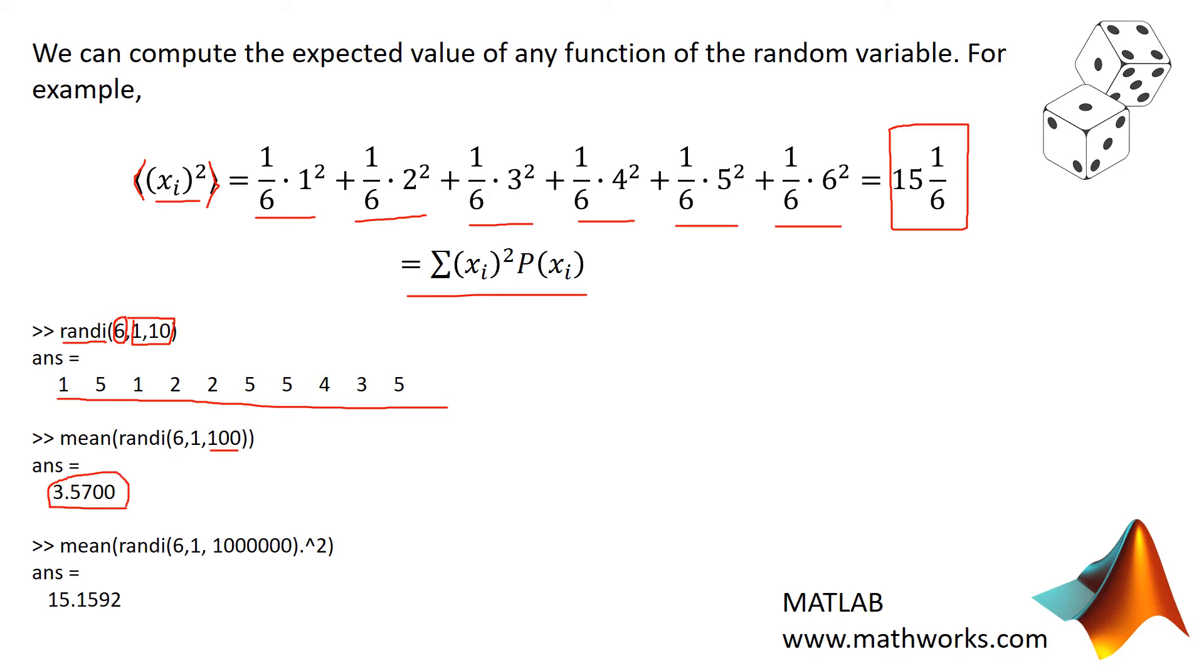If you increased this number to a million, or to a bazillion, your outcome would become arbitrarily close to 3.5. So now let's take the average of x squared. In this case, I'm doing a million rolls. And I get a result that's pretty close to 15 and 1 sixth. So you should try this yourself and see what you get.